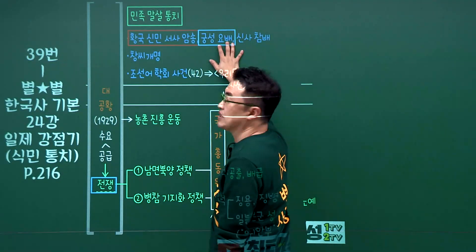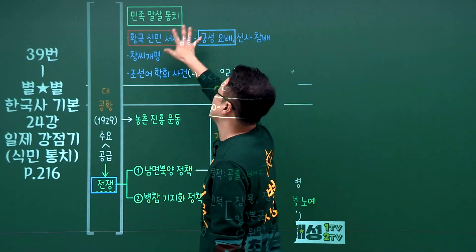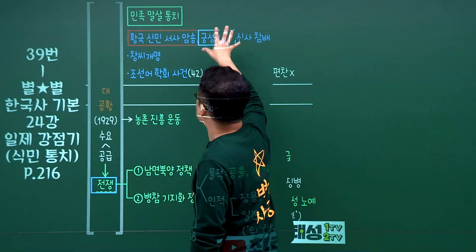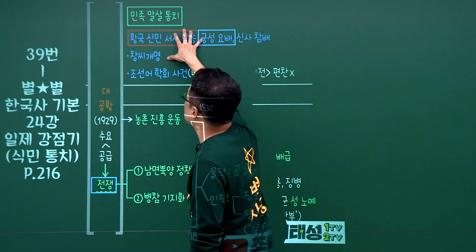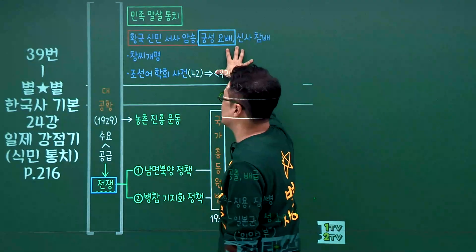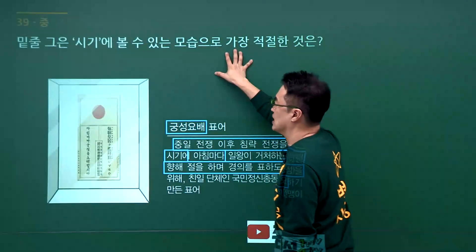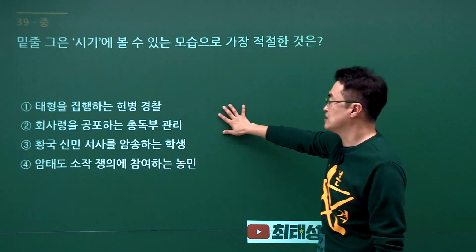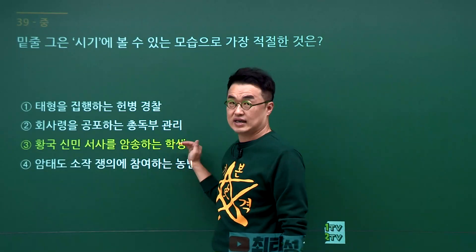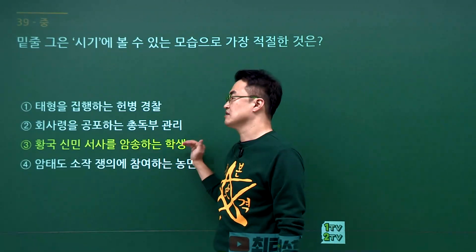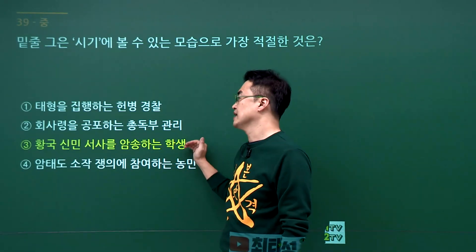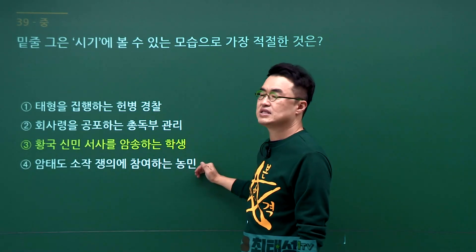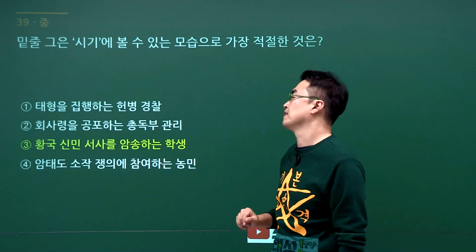일제강점기 1930년대 정책 문제입니다. 궁성요배가 나오면 1930년대 일제 정책이며 황국신민서사와 연결됩니다. 문제에서 궁성요배가 등장했으니 1930년대이고 정답은 황국신민서사입니다. 3번입니다. 태형은 1910년대, 회사령은 1910년대, 암태도 소작쟁의는 1920년대입니다.